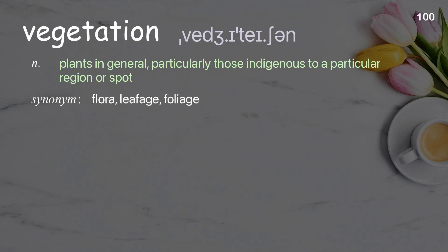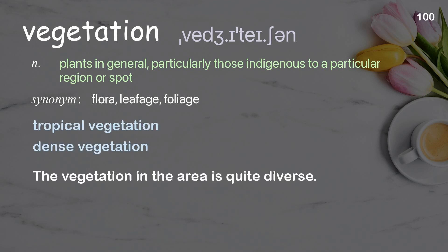Vegetation: plants in general, particularly those indigenous to a particular region or spot. Examples: tropical vegetation. The vegetation in the area is quite diverse.